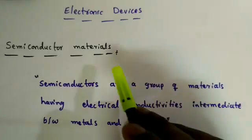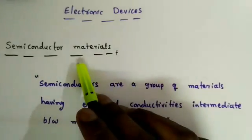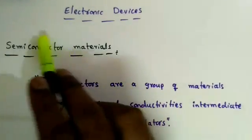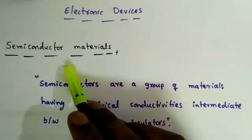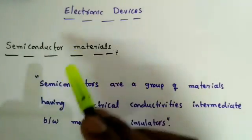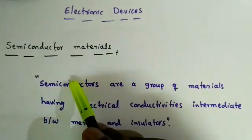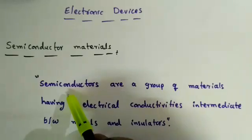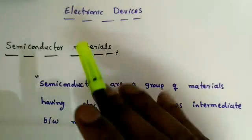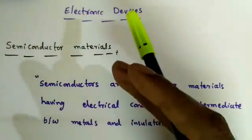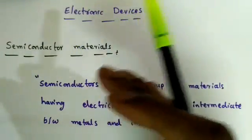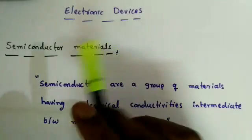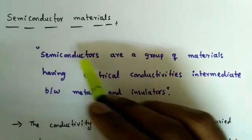In this lecture I will discuss some important points about semiconductor materials: what is a semiconductor, what are the different types of semiconductors available, and what are the applications of these semiconductors — because depending on the application we have to use different types of semiconductors.